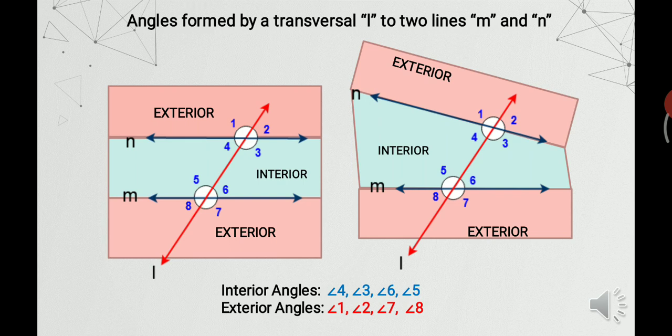In both figures, L is a transversal to the lines M and N. In the first figure, a total of 8 angles are formed by the parallel lines and a transversal. Also in the second figure, the same 8 angles are formed by the non-parallel lines and the transversal. Angles 3, 4, 5 and 6 are called interior angles since these angles lie in between the two lines. Similarly, angles 1, 2, 7 and 8 are called exterior angles since they lie on the outside of the two lines.